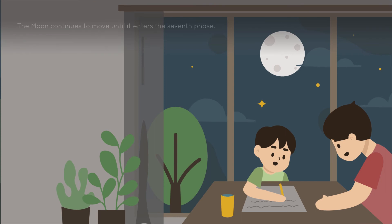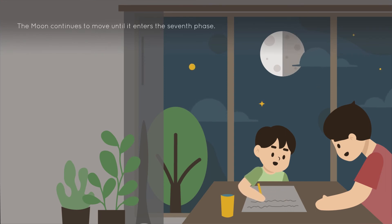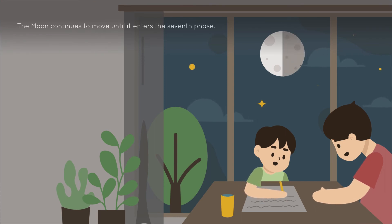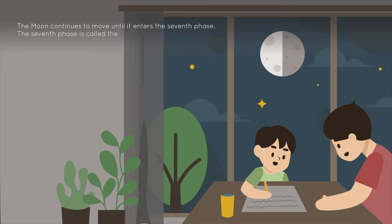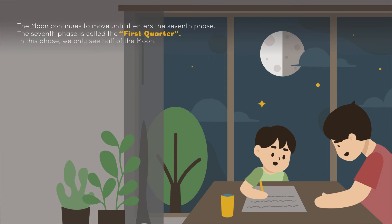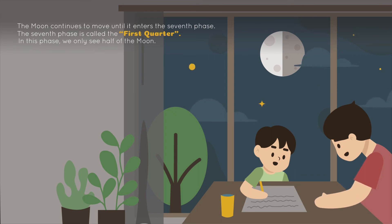The moon continues to move until it enters the seventh phase. The seventh phase is called the last quarter. In this phase, we only see half of the moon.